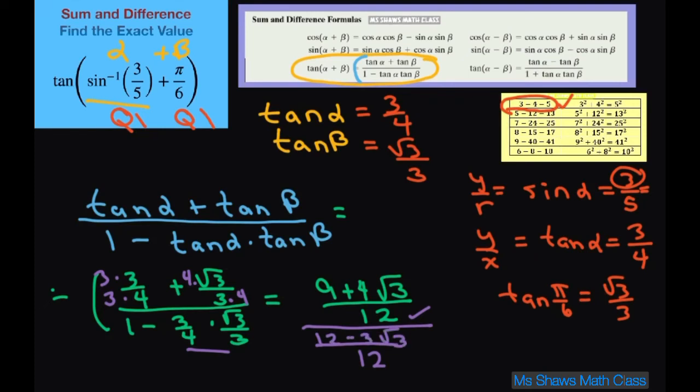Again, if we need a 12, then you just write everything out. So now when you simplify this, these two cancel. And we have 9 plus 4 square root of 3 divided by 12 minus 3 square root of 3.